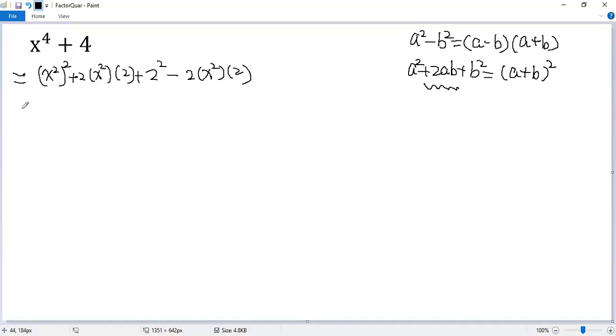The first terms combine to a perfect square, so x squared plus 2 squared. The last term, 4x squared, can be written as 2x squared.